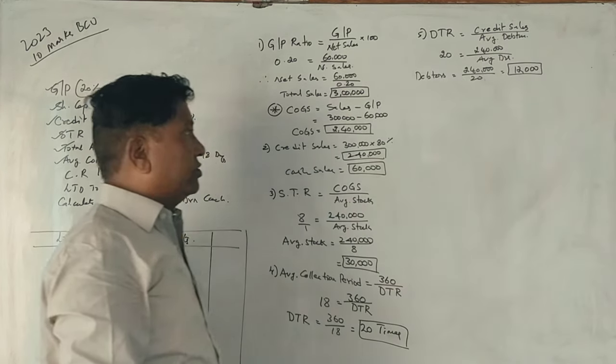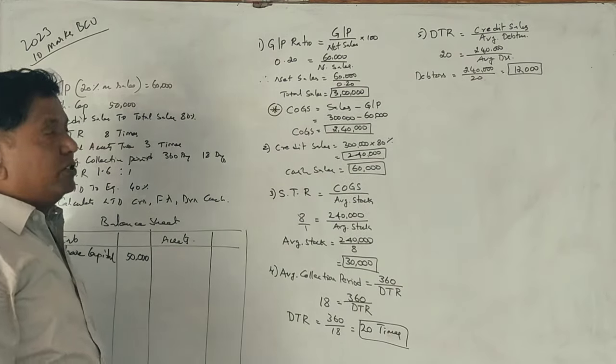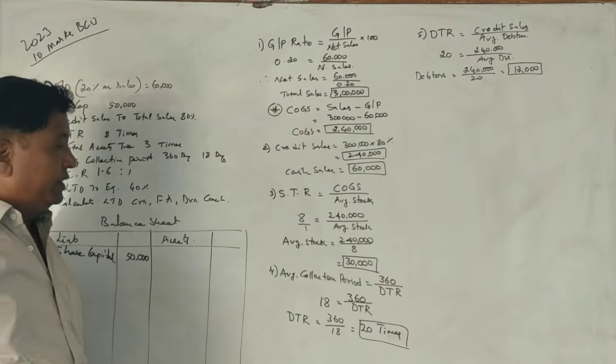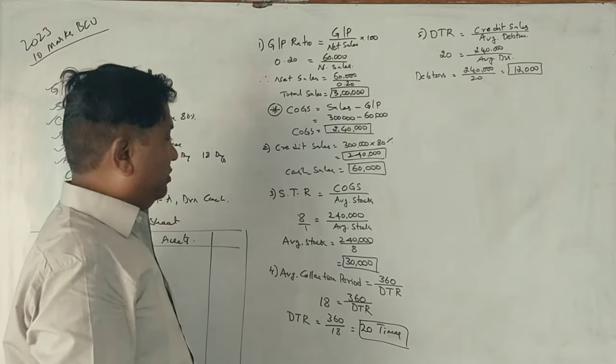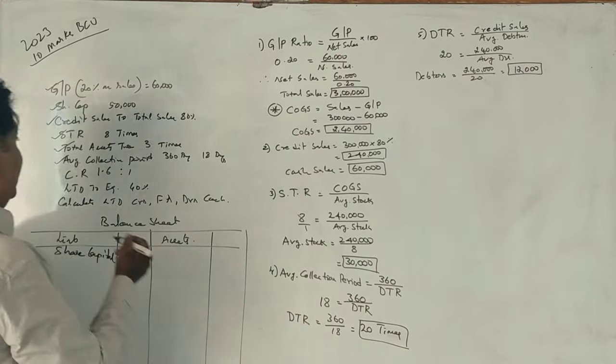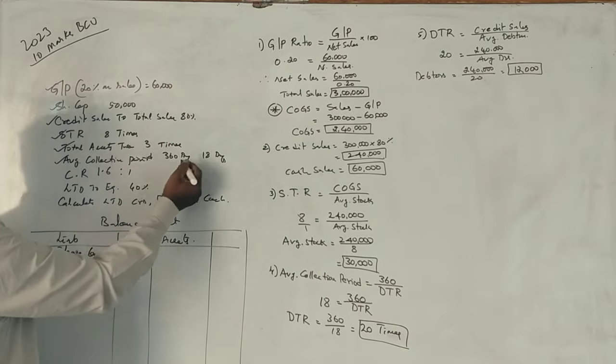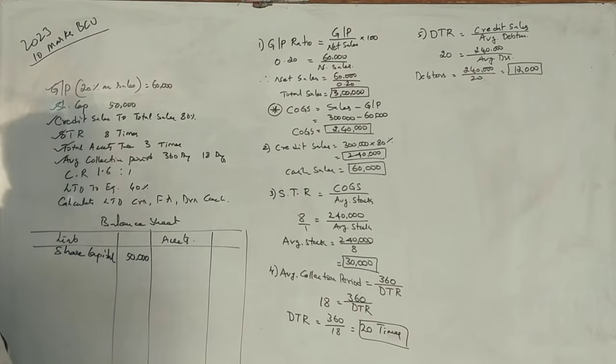The debtors value comes to Rs. 12,000. Now we need to review the average collection period and proceed to current liabilities.